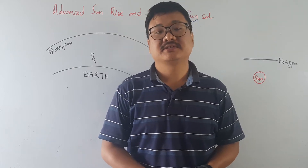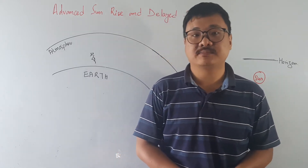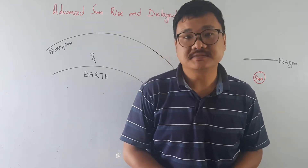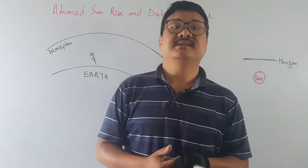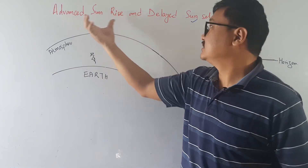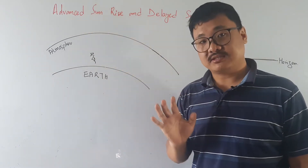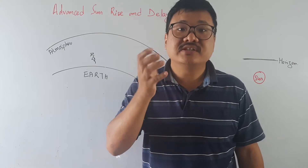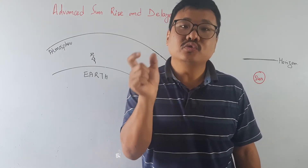Dear students, in the last topic we studied about atmospheric refraction and the twinkling of stars. Today's topic is advanced sunrise and delayed sunset. This means the sun is visible to us about two minutes before the actual sunrise.